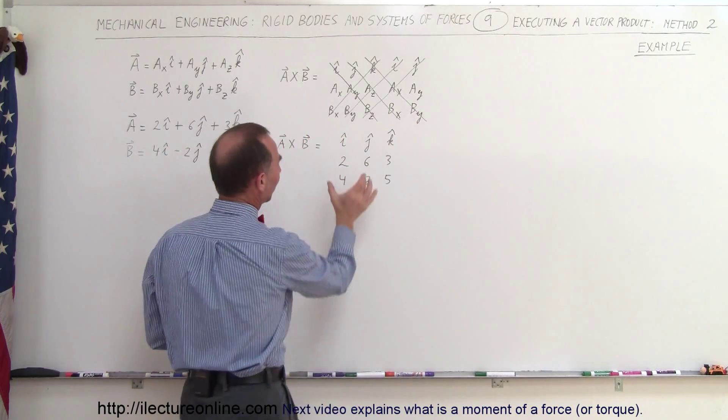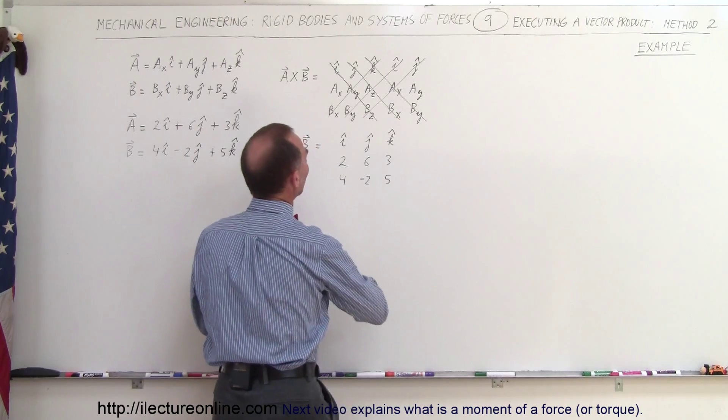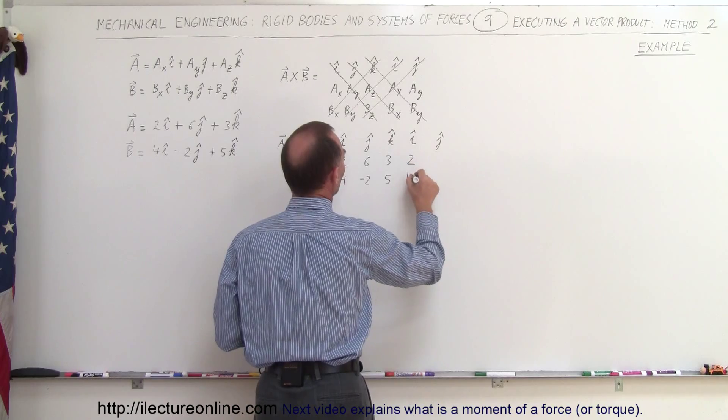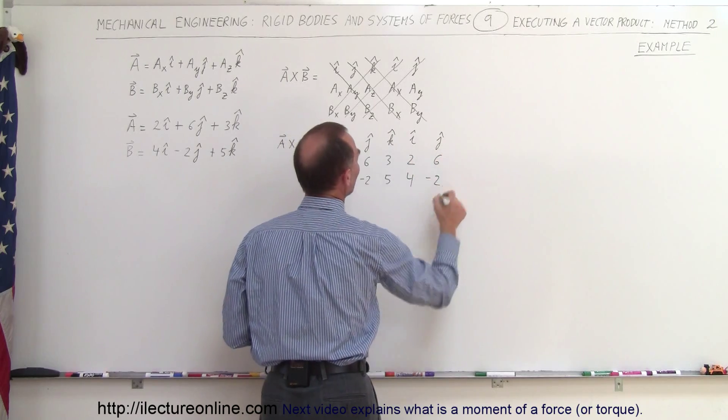And then you add the first two columns again at the end. So we have your I and your J and then you repeat the numbers 2 and 4 and 6 and negative 2.